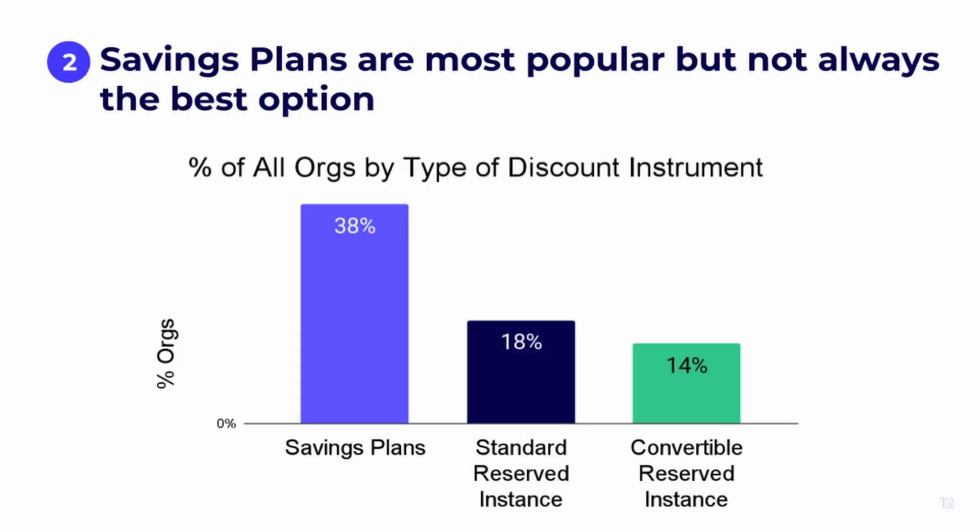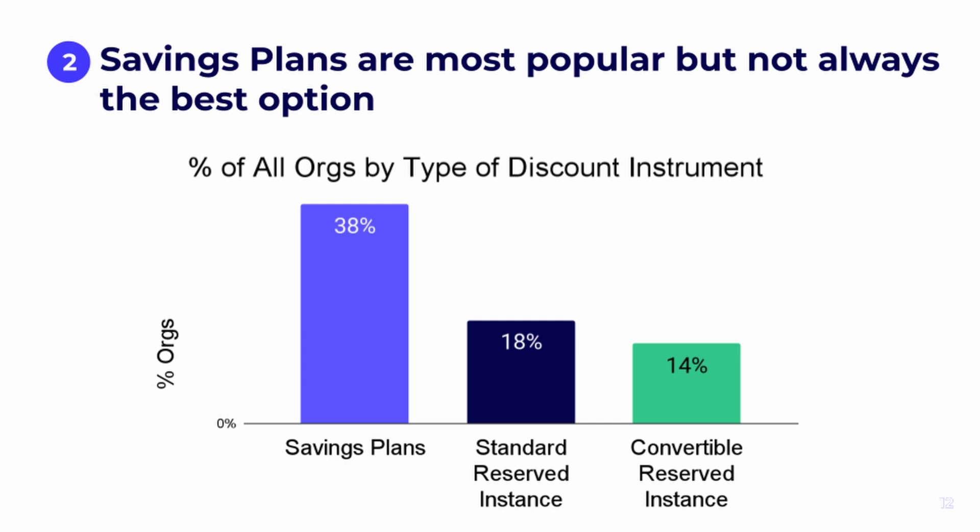Among discount instruments, savings plans were the most popular — they're easy to implement, recommended by AWS, and require no effort after purchase. Standard reserved instances have been around longest but are immutable; you'd need to swap them in the RI marketplace to exit. Convertible reserved instances are lesser known and tend to be what ProsperOps favors, because they are the only discount instrument that allows you to change commitment terms after purchase. Savings plans, on the other hand, are long-term and essentially immutable, which carries risk.